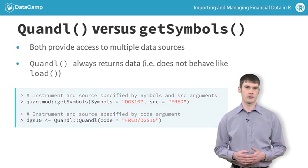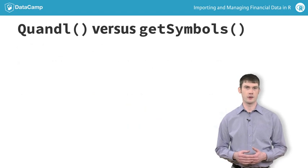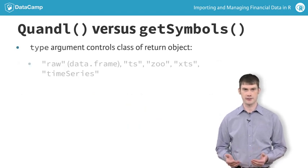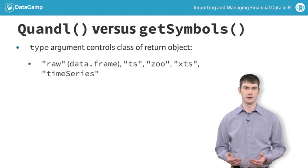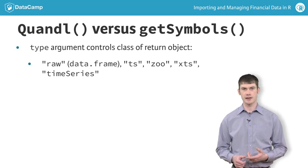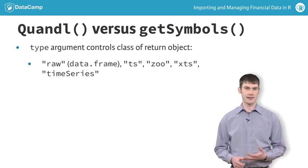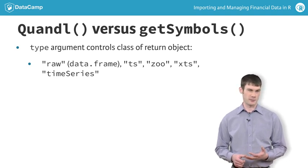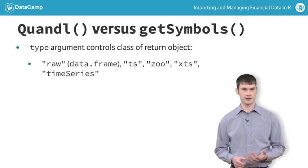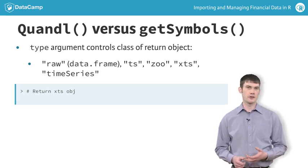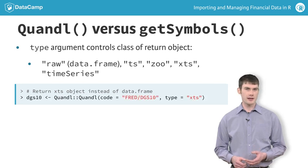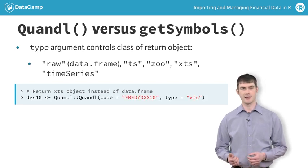Like Git Symbols, the Quandl function can import the data into several different classes of objects, including a data frame, an XTS object, a zoo object, or a TS object from the stats package, or a time series object from the time series package in the R metrics suite.